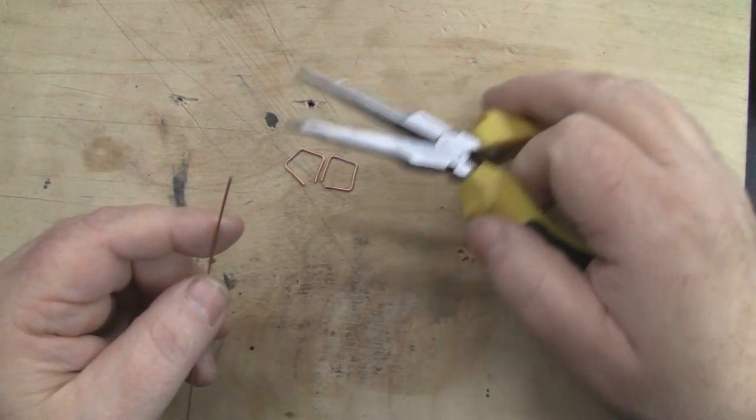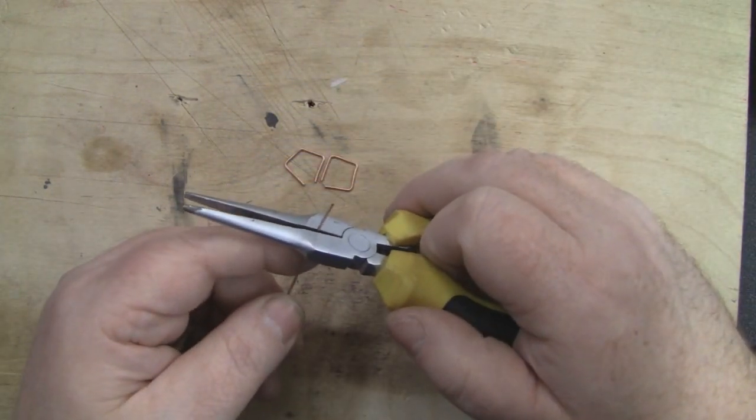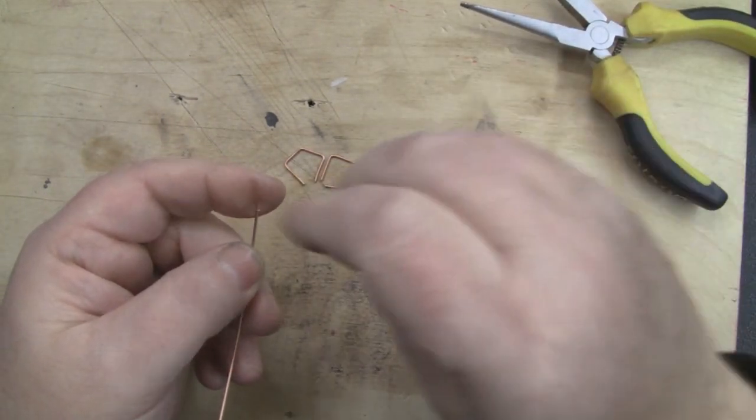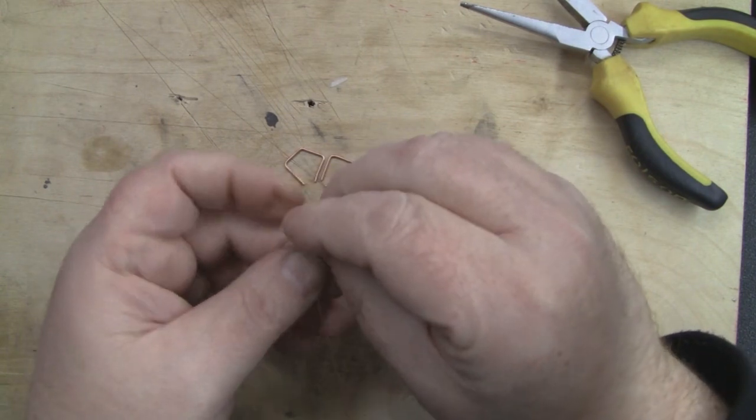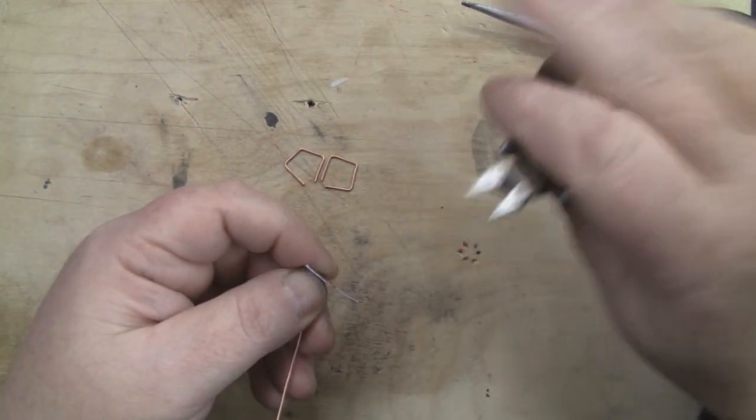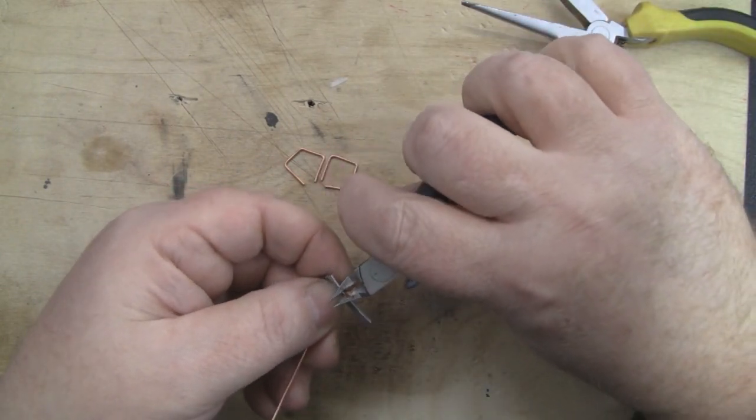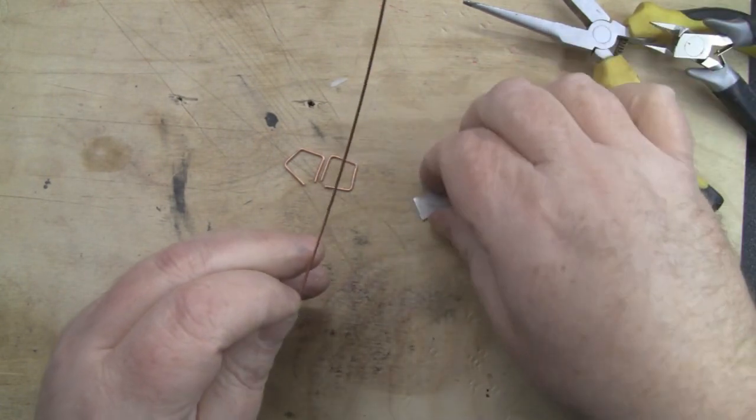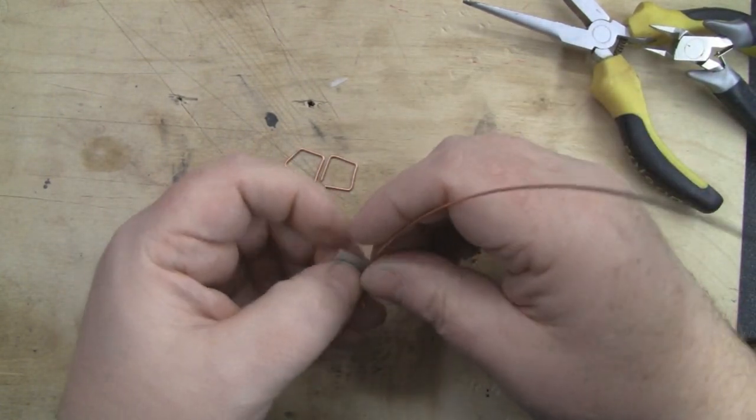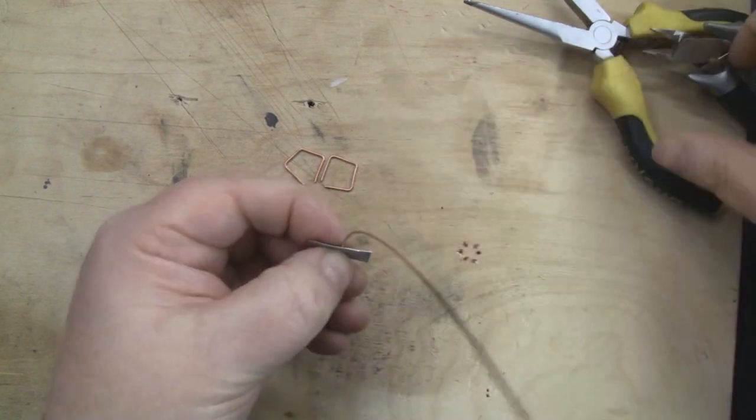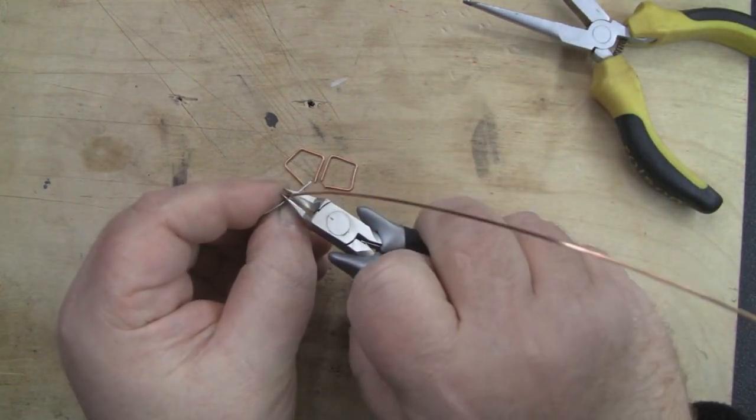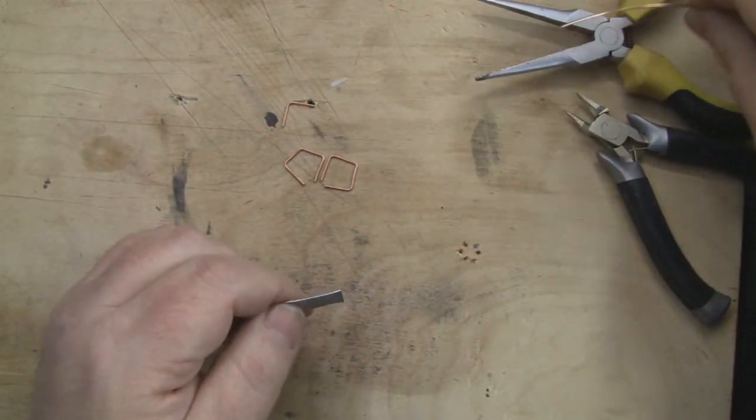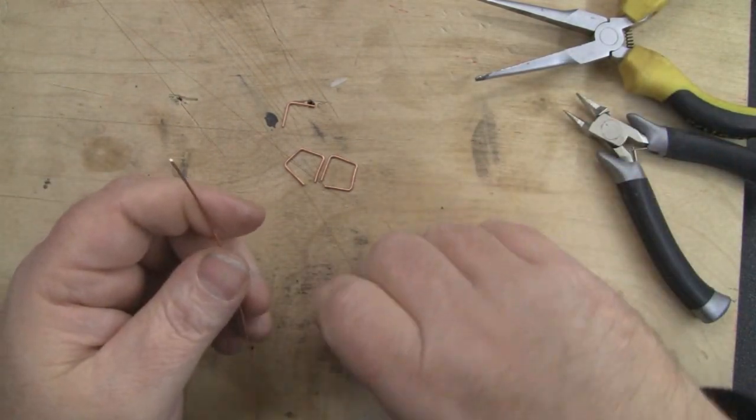Now that we've got those two elements finished, we're going to make two more elements but slightly different this time. Again I'm going to guesstimate a bend in there, and these ones are going to be two L-shaped elements. Again use our cutting tool.